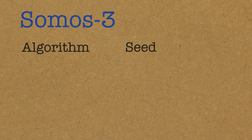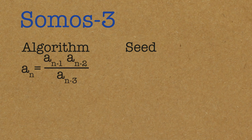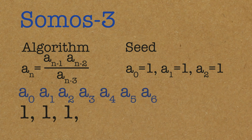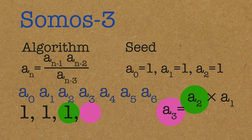Now let's go to Somos 3. The algorithm is: a_n = a_{n-1} times a_{n-2} divided by a_{n-3}. Our seed is going to be a_0 = 1, a_1 = 1, a_2 = 1. So your sequence starts from three 1s. Now a_3 is a_2 times a_1 divided by a_0, which is 1.